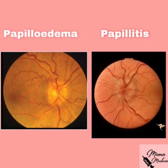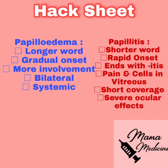Here you can see the difference between papilledema and papillitis. On the right side you can see hemorrhages and blurring of the edges of the optic disc in papillitis, while on the left side in papilledema you can see the sharp margins of the optic disc.